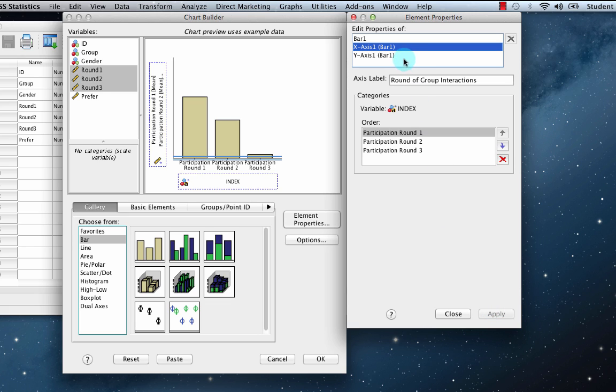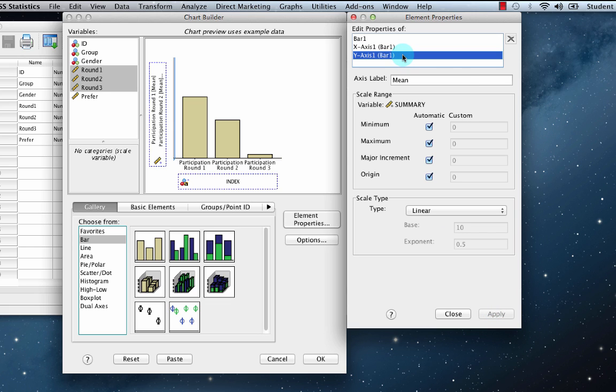Click on y-axis one, bar one. Change the name of the axis label to mean participation. And then click apply, and OK.